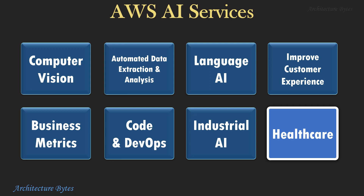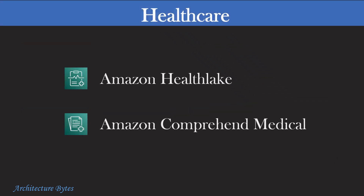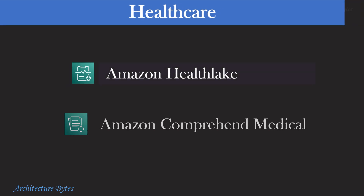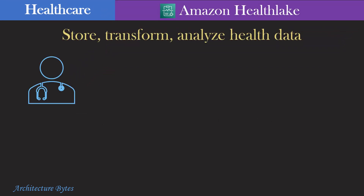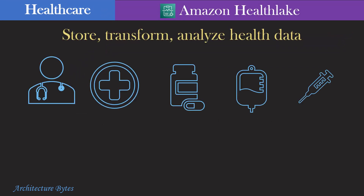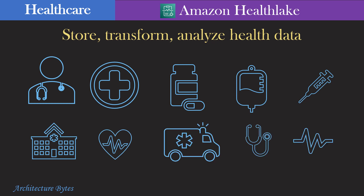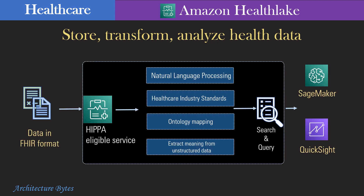Our next category is the Healthcare group of AI services. Under this category, we have Amazon Health Lake and Comprehend Medical. Healthcare data is generated in the form of doctor's notes, prescriptions, clinical reports, medical tests, and so on. Most of this is unstructured and hard to search. Amazon Health Lake allows healthcare providers to store, process, query, and analyze healthcare data.